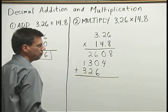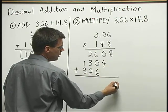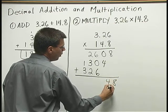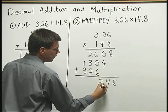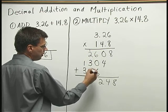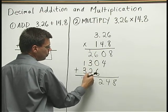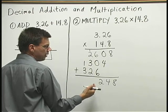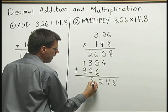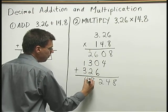Now I add, just as if I were doing whole number multiplication. 8, 4, 6 and 6 is 12. Write down 2, carry the 1. 2 plus 3, plus 2 is 7, plus 1 is 8. 3 plus 1 is 4.